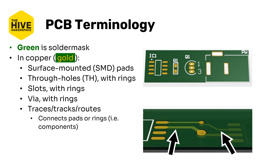The last thing sometimes shown in gold is the actual copper traces — also known as tracks or routes — that run between pads and plated holes to electrically connect components and devices together. These are usually hidden by solder mask but can often be seen on a physical board as slight ridges pushing up from underneath.